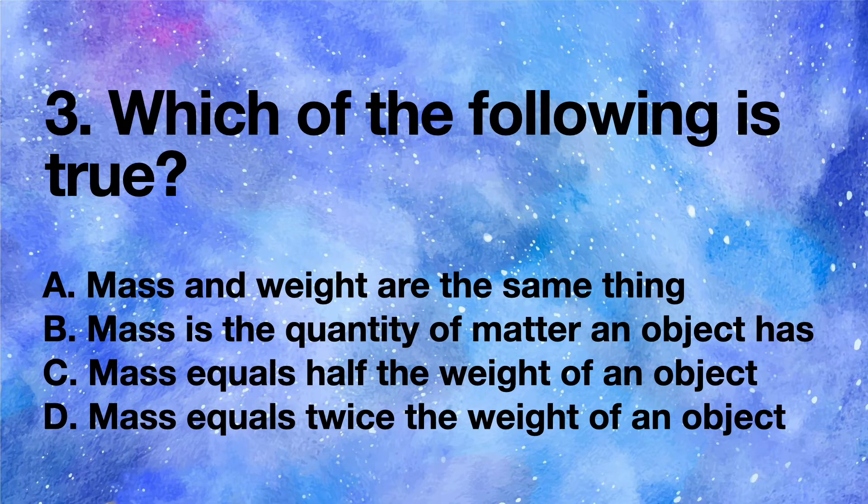Which of the following is true? A mass and weight are the same thing, B mass is the quantity of matter an object has, C mass equals half the weight of an object, D mass equals twice the weight of an object.